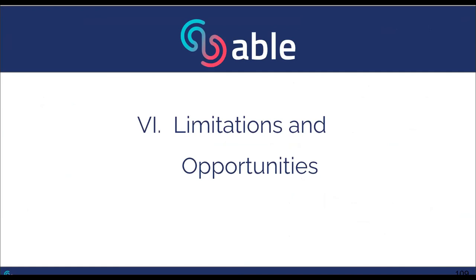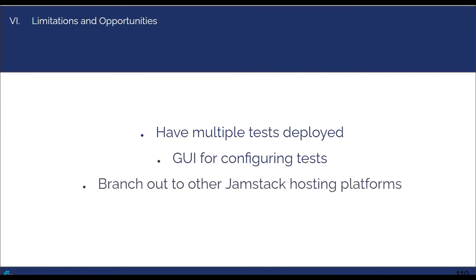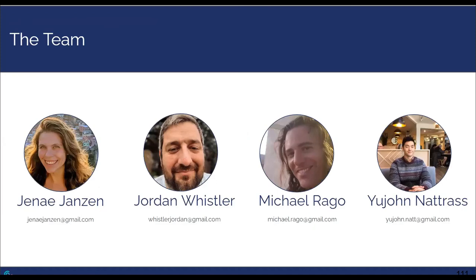Now let's go over some future work for ABLE. We would like users to be able to deploy multiple A-B tests simultaneously — currently only one test can be up and running. We would also like to provide a GUI for configuring tests instead of having users fill out a JSON template, which will enhance user experience and make ABLE less prone to human errors. Finally, we would like to support other JAMstack hosting platforms such as AWS Amplify. This concludes our presentation about ABLE — thank you for being here with us today.